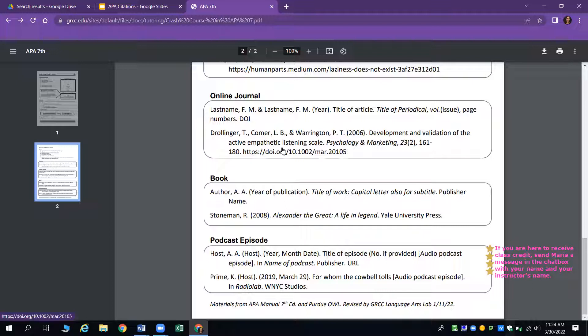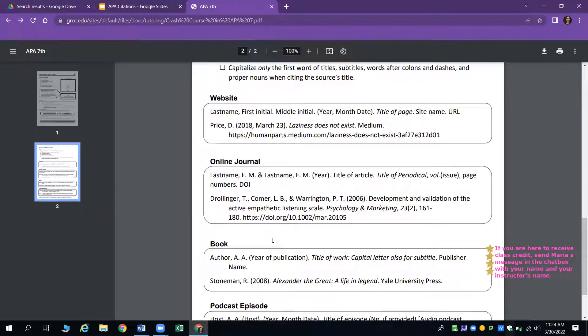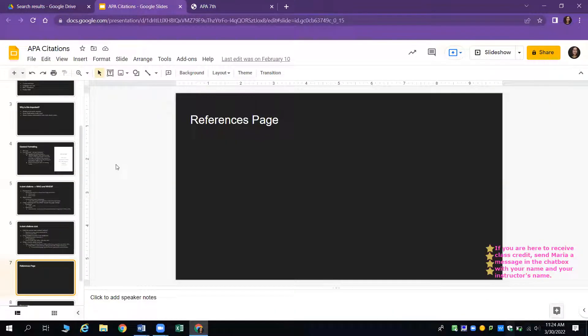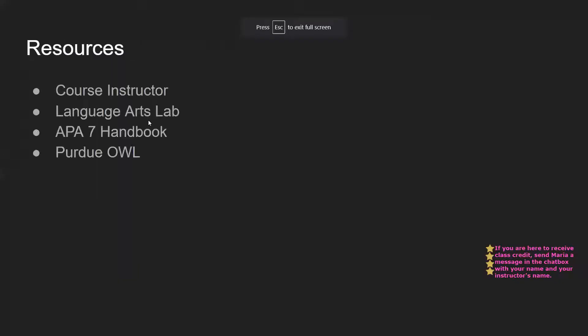That covers the online journal citation. There are also book and podcast episode examples on the sheet, but websites and online journals are what most folks work with. If you have questions about any other citation formats, we can look them up and work through them together. To summarize available resources: your course instructor, the Language Arts Lab, the APA 7 Handbook, and Purdue OWL all have good information and tips on citing your sources.